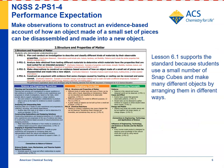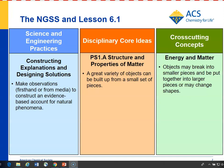For the NGSS standard 2-PS1-4 — make observations to construct an evidence-based account of how an object made of a small set of pieces can be disassembled and made into a new object — Lesson 6.1 supports that standard because students use four and five snap cubes arranged in different ways to make many different objects. For science and engineering practices, specifically constructing explanations and designing solutions, students are introduced to the idea of models — that snap cubes can be models of atoms and can be put together to make molecules.